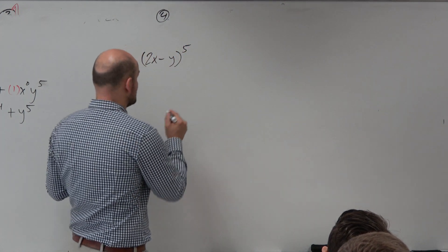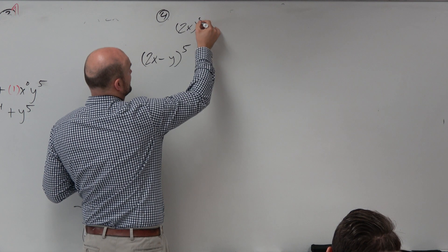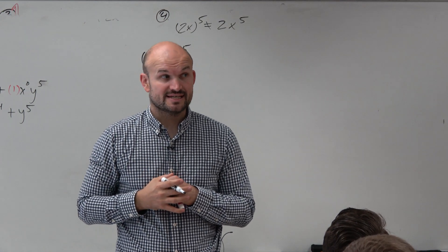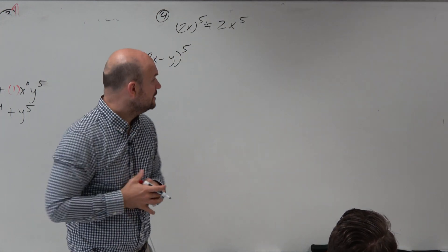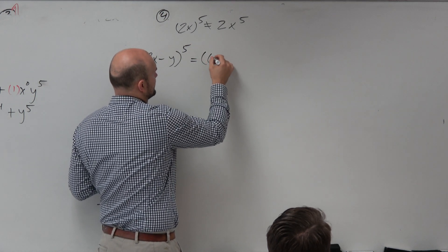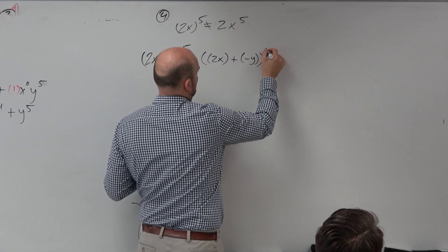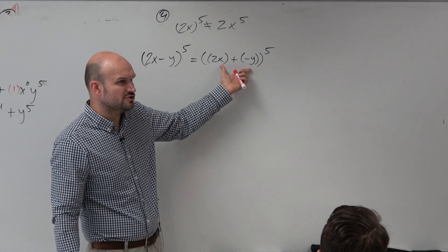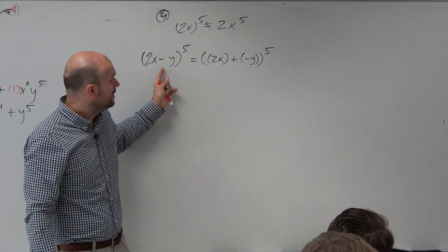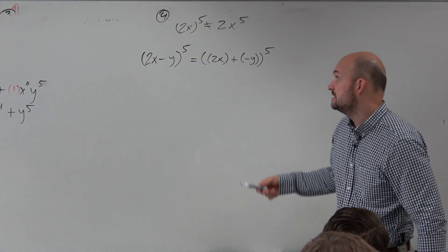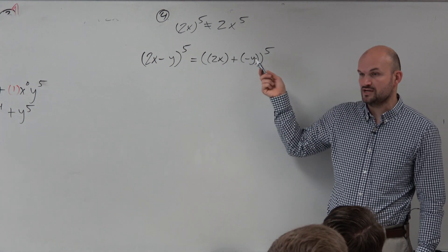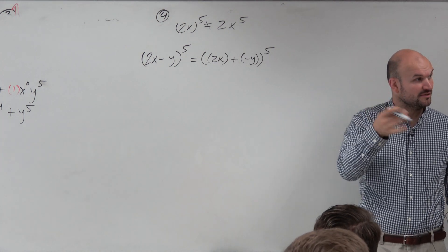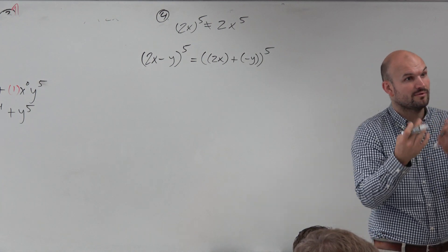They have coefficients, so this is very important because 2x to the fifth is not the same thing as 2x to the fifth. What that means is parentheses are going to play a very important role. What I like to do in this problem before I do anything else is put things in parentheses. I'm going to put parentheses around each term, change this to a plus and negative y, so I know that there's a negative 1 as my coefficient. The formula for the binomial expansion was the sum of two values, so I'm going to rewrite it as a sum.